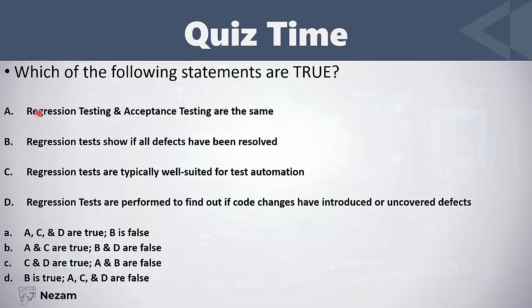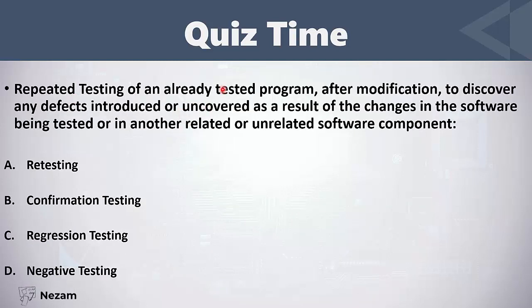Which of the following statements are true? 'Regression testing and acceptance testing are the same' — of course not, this is wrong. 'Regression tests show if all defects have been resolved' — this is not correct because exhaustive testing is impossible. 'Regression tests are typically well suited for test automation' — this is correct; we use automation to automate regression test suites.